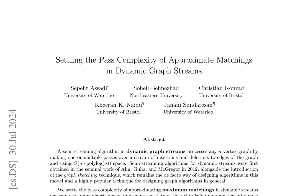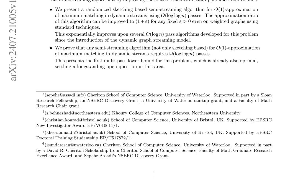The authors first present prior work in ACG+15 and VEL24, and then introduce their dynamic streaming algorithm for matchings. The algorithm uses a random order greedy approach and is implemented using a sketching and streaming toolkit. The authors also prove that any semistreaming algorithm for O(1) approximation of maximum matching in dynamic streams requires Ω(log log n) passes. This is the first multi-pass lower bound for this problem, which is already optimal, settling a long-standing open question in this area.